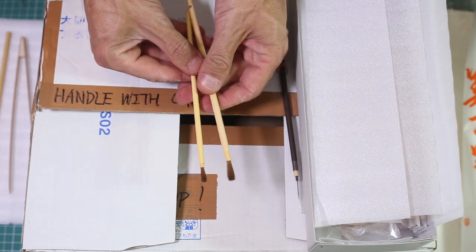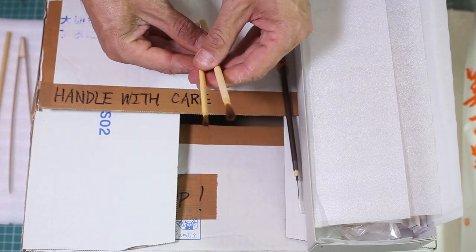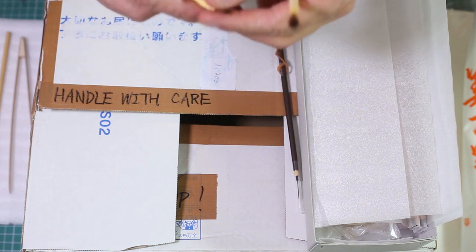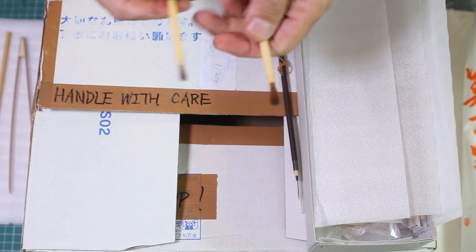Those two brushes are for sprinkling metal powders on Uwazuri. And they are used for Maki-e.